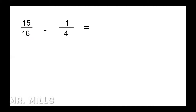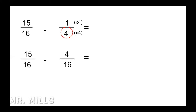Next: 15 sixteenths minus 1 fourth. We find the common denominator — the biggest one is 16. We ask: what times 4 equals 16? That's 4. So 4 times 4 is 16, and what you do to the bottom, you do to the top: 4 times 1 is 4 sixteenths. Then 15 minus 4 is 11, keeping the denominator. So 11 sixteenths is our final answer — we're left with an odd number on top.